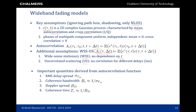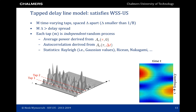With this more compact autocorrelation function depending on only two arguments — a delay and a time difference — we can determine the four important quantities of the channel: the RMS delay spread, the coherence bandwidth, the Doppler spread, and the coherence time. One way to simulate a channel satisfying the WSSUS assumption is the tapped delay line model, where we consider M time-varying taps (complex numbers) spaced Δ apart in the delay domain.